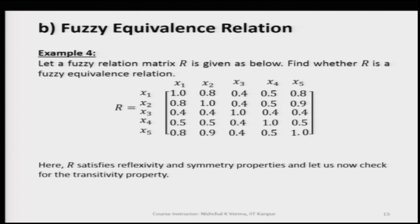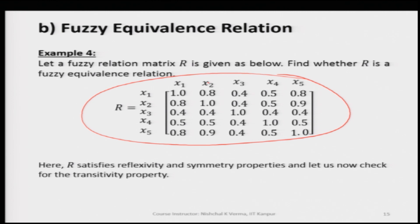Here we have taken a fuzzy relation set represented in the form of a matrix, where all elements are membership values corresponding to its rows and columns. To check whether this fuzzy relation is qualified to be called a fuzzy equivalence relation, we need to check for the three conditions: first reflexivity, second symmetry, and third transitivity.